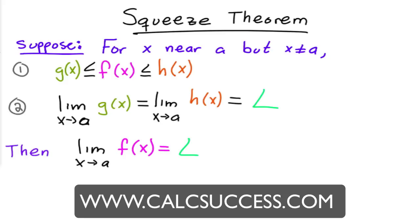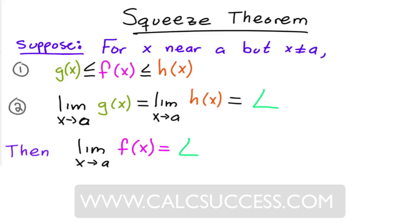If both g of x and h of x have at a the same exact limit, then the function f of x, which is in between those two, would have to have the same limit.